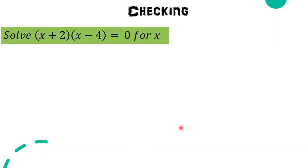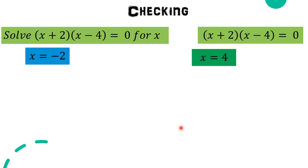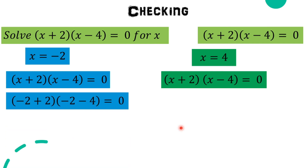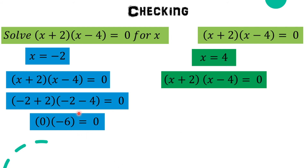Now let's check if the value of x is correct. We substitute x = -2 into (x + 2)(x - 4) = 0: we get (-2 + 2)(-2 - 4) = 0. Negative 2 plus 2 is zero, and negative 2 minus 4 is negative 6. Zero times negative 6 equals zero. Therefore, our value x = -2 is correct.